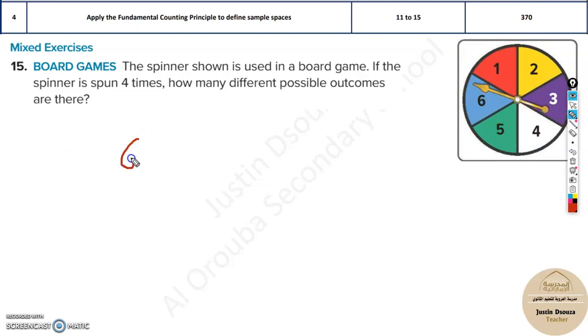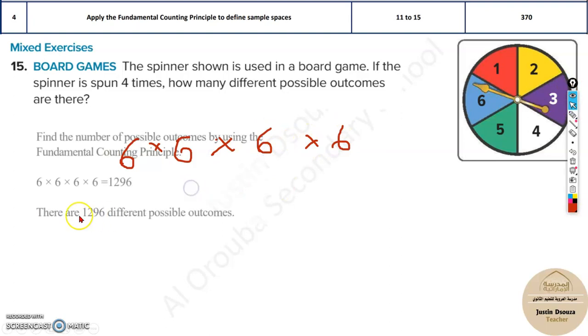You spin once, there are 6 possibilities for an answer. Then you're going to spin again. You need to keep on multiplying. So, if you spin 2 times, there will be a total of 36 possibilities. Then if you do it again, times 6, then times 6. It will be 6 to the power of 4, so it will be 1,296 different possible outcomes.